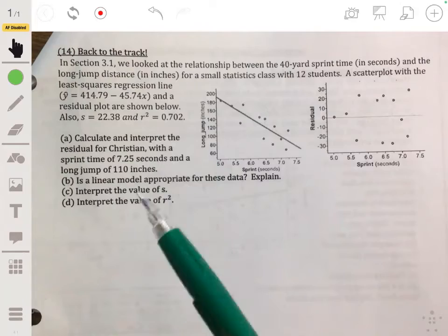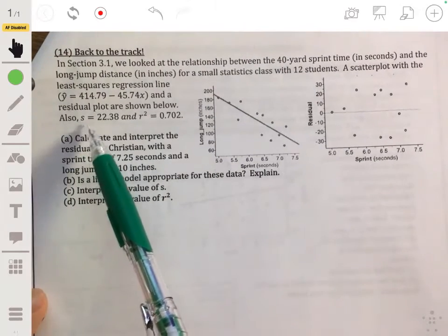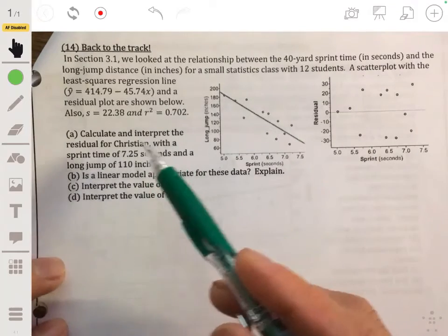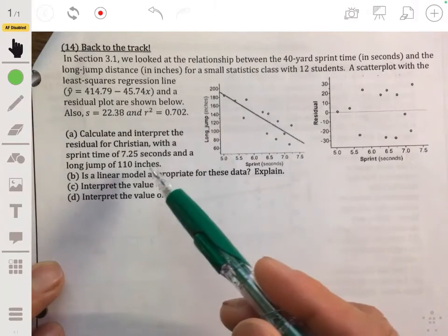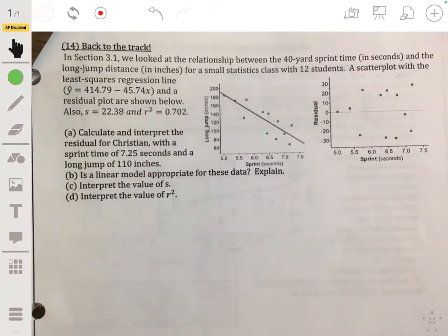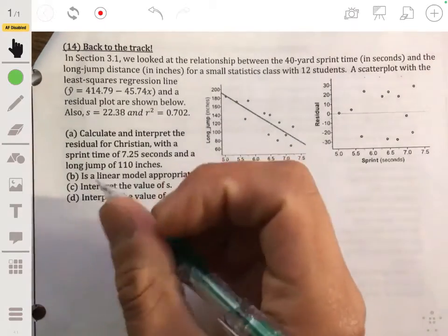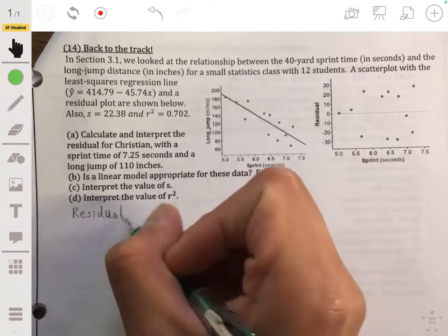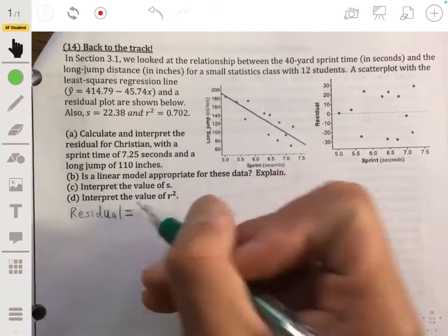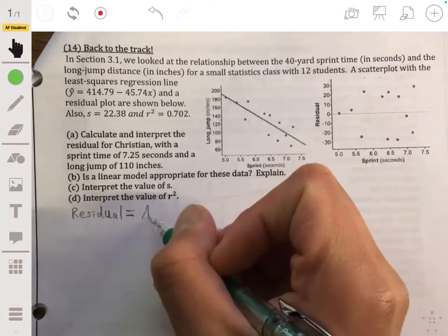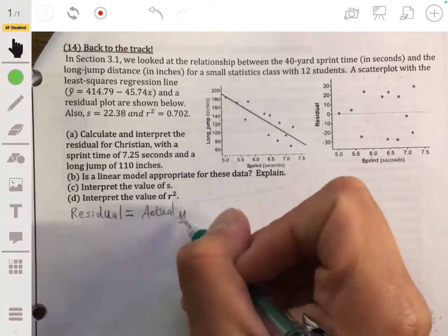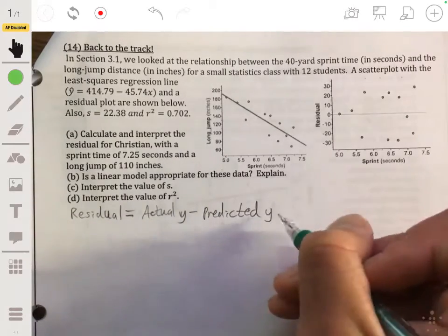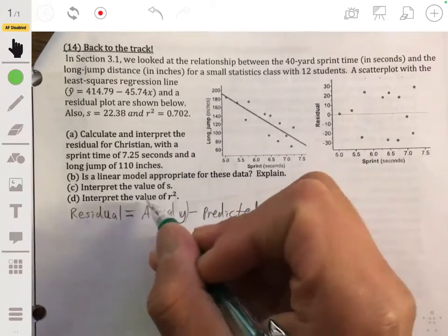It tells us that the standard deviation of the residuals is 22.38 and the r-squared is 0.702. So let's first work through each of these. First, we're going to calculate and interpret the residual for Christian with a sprint time of 7.25 seconds and a long jump of 110 inches. So remember, the residual is equal to the actual y value minus the predicted y.